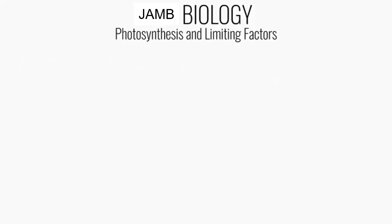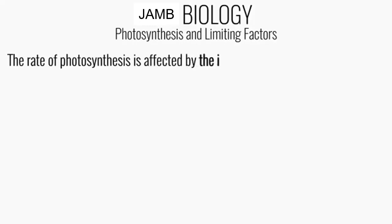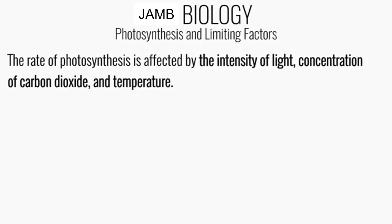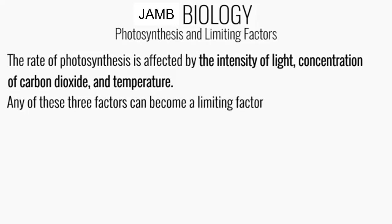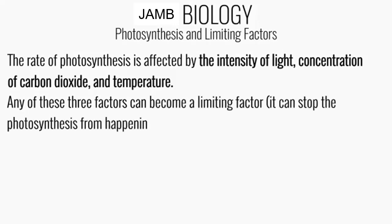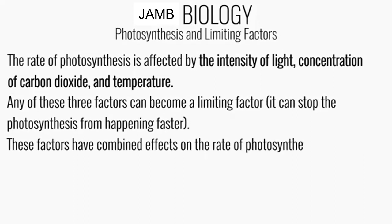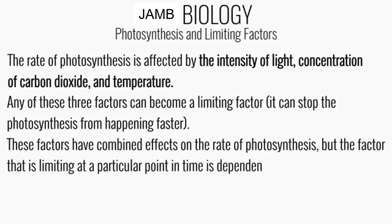Next, let us consider the limiting factors that affect the rate of photosynthesis. The rate of photosynthesis is affected by the intensity of light, concentration of carbon dioxide, and temperature. Any of these three factors can become a limiting factor, meaning it can stop photosynthesis from happening faster. These factors have combined effects on the rate of photosynthesis, but the factor that is limiting at a particular point in time is dependent on the environmental conditions.